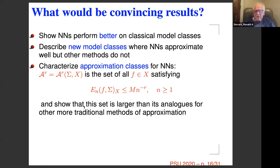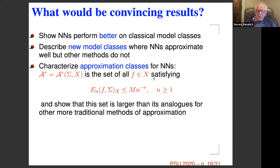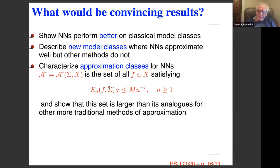The most powerful way to say your method is better is through approximation classes. If we take a rate of approximation — say N^{-r} — and look at all functions approximated by Σ_N at that rate, that collection forms an approximation class. If I can show that this class for my method is bigger than for all other methods, I have a convincing argument that my method is better.